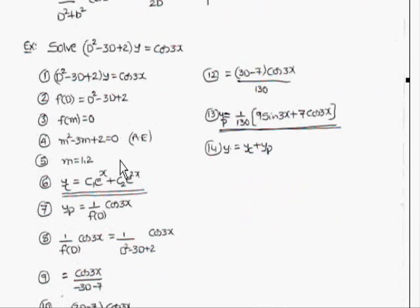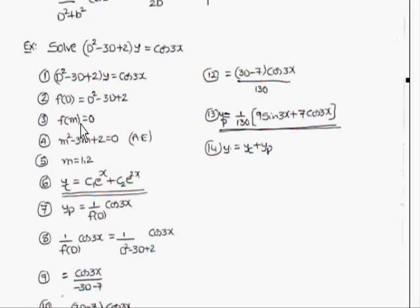Consider the example: solve (D² - 3D + 2)y = cos3x. Here f(D) = D² - 3D + 2. The auxiliary equation is f(m) = 0, so m² - 3m + 2 = 0, giving roots m = 1 and m = 2. Therefore, the complementary function is C₁eˣ + C₂e²ˣ.